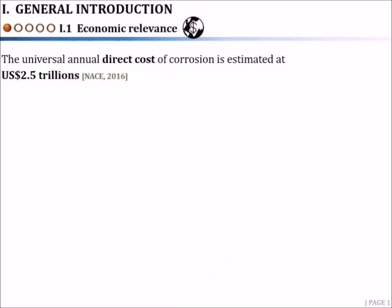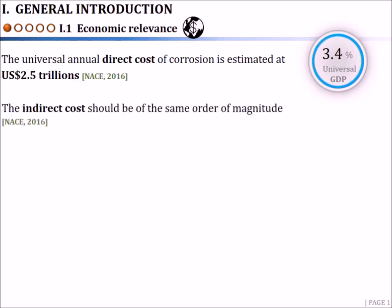According to the NACE report published in 2016, the universal annual direct cost of corrosion is estimated at 2.5 trillion US dollars, which is equivalent to 3.4% of the universal GDP. The indirect cost should be of the same order of magnitude.